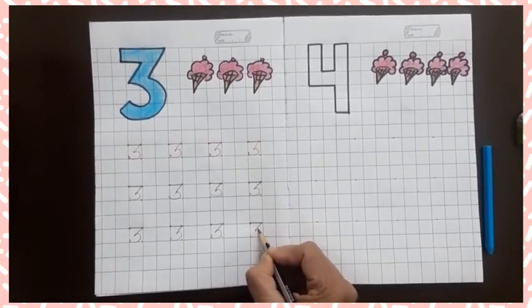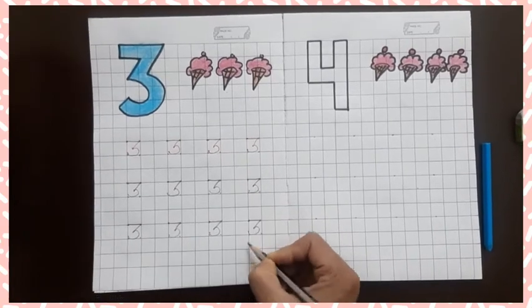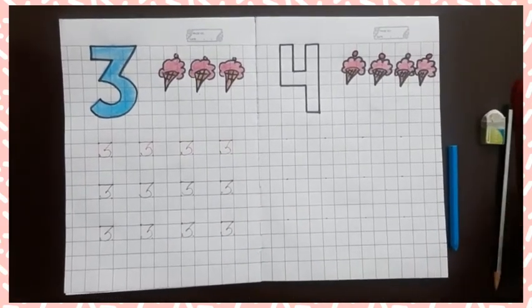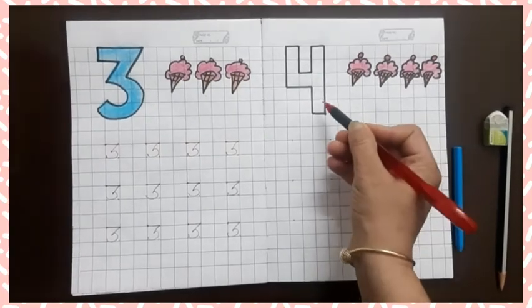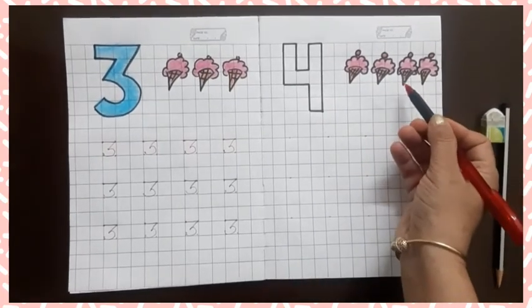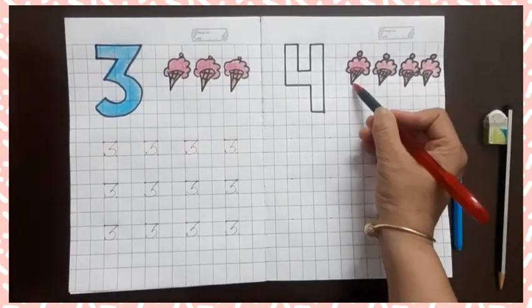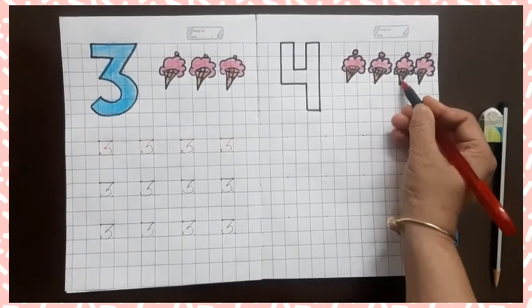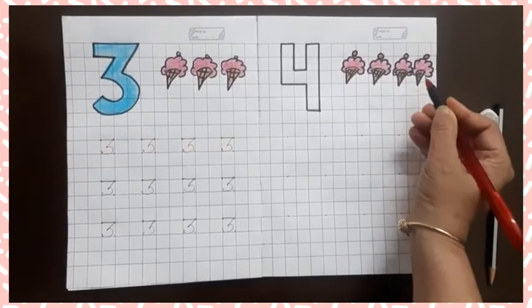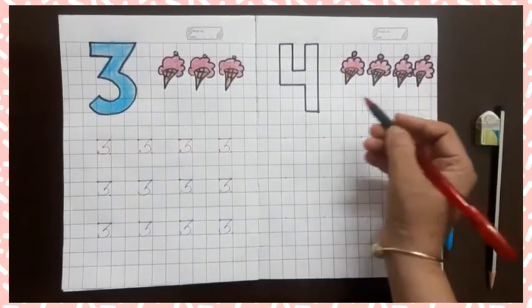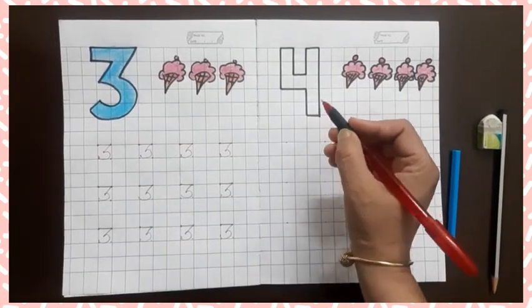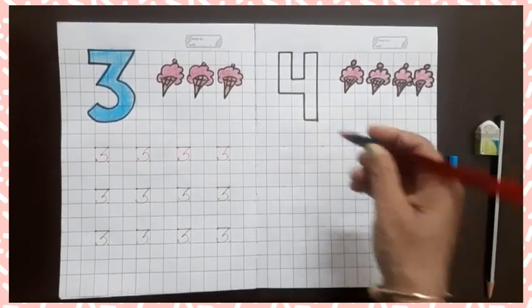Three. Now next number is 4. How many ice creams? 1, 2, 3, 4. 4 ice creams. Draw 4 like this and color it.